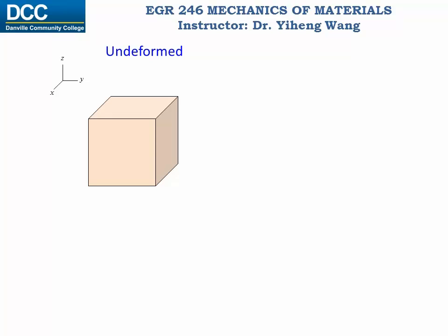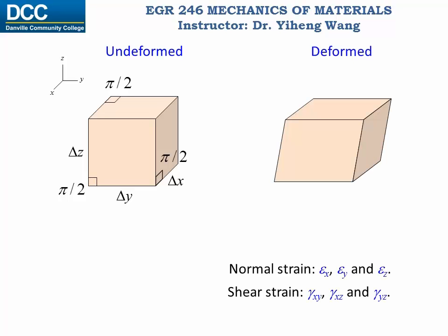Similarly, for an undeformed particle represented by this rectangular element, it has three original lengths: delta x along the x direction, delta y along the y direction, and delta z along the z direction. Within the xy plane, all angles are right angles, half pi, same for the yz plane, and same for the xz plane. The deformation of this particle can also be fully characterized by six strain components — three normal strains epsilon x, epsilon y, and epsilon z that describe the size change along the x, y, and z axes respectively.